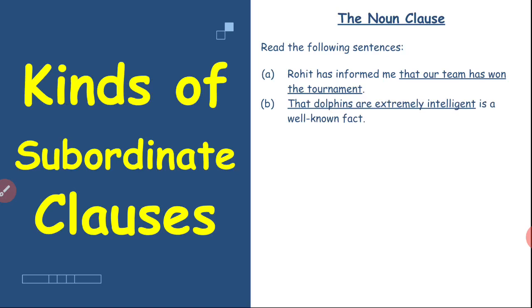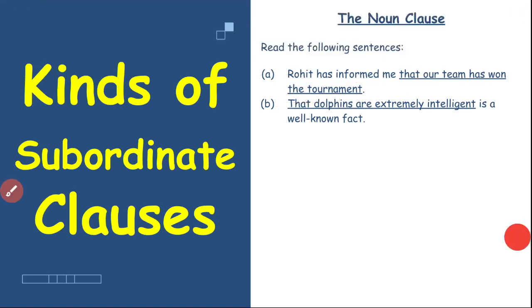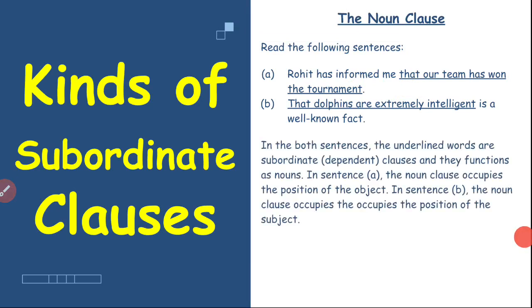The first sentence is: 'Rohit has informed me that our team has won the tournament.' Here you can see a conjunction joining 'Rohit has informed me' with 'our team has won the tournament.' The second sentence is: 'That dolphins are extremely intelligent is a well-known fact.' The underlined words in both sentences are subordinate or dependent clauses.